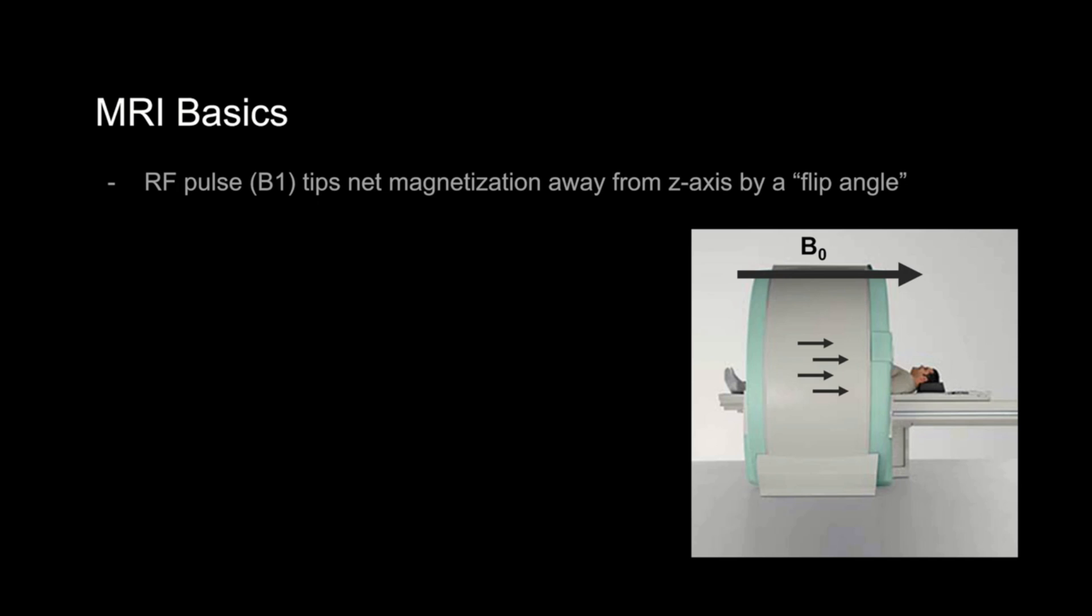A key point is that in order to tip the magnetization away from the z-axis, the RF pulse has to be at a frequency that matches the spin of what it's trying to tip down. For now, who cares about these details? What matters most is that the RF pulse tips the net magnetization away from the z-axis and into the xy plane. How much it tips away from the z-axis is called the flip angle. Here, for simplicity, let's say that this is 90 degrees for now, and again, with this 90 degree RF pulse shown here with B1, the net magnetization is tipped into the xy plane, again perpendicular to the z-axis that we described prior.